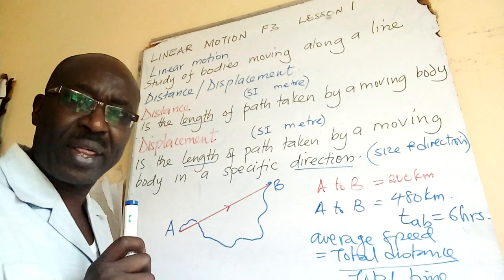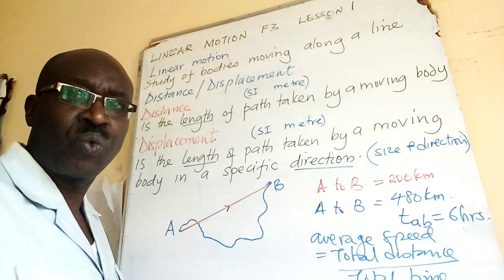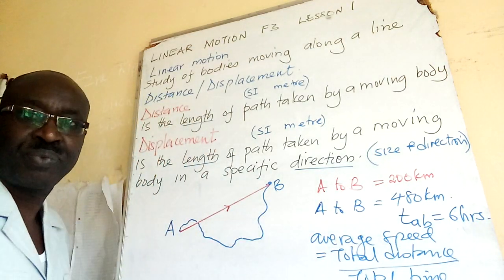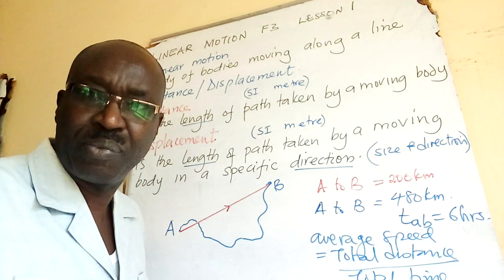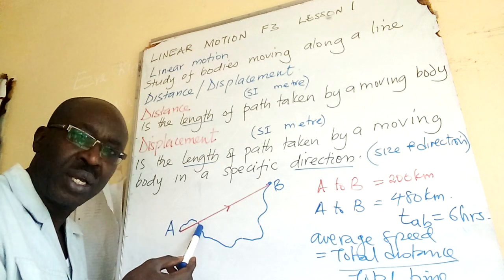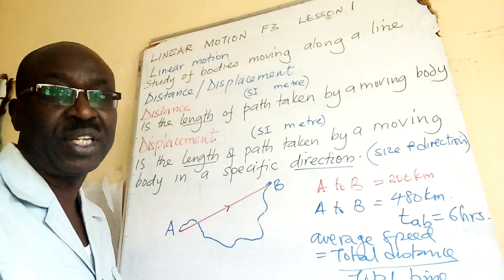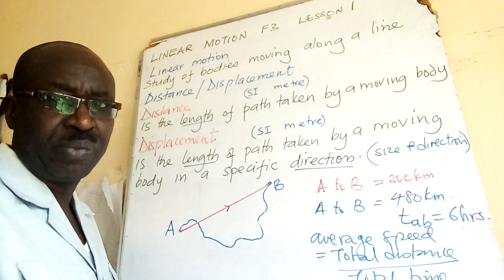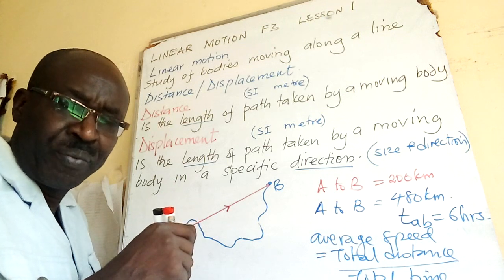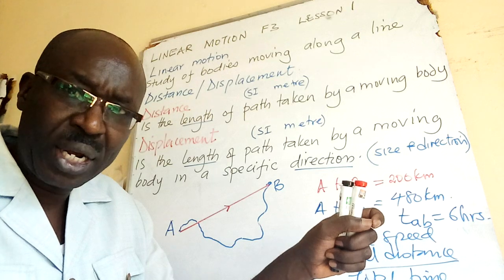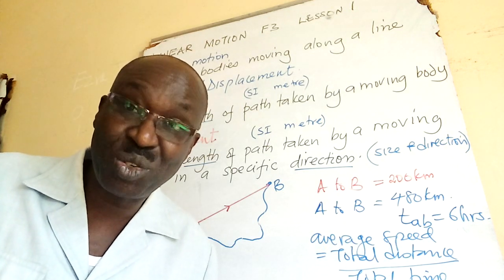In linear motion, whether on a straight path or on a meandering path, we can measure what we call distance. Distance is the length of the path taken by the moving body. If it is map work, you would take a thread and move it the way the blue path moves until you reach point B, then straighten it on a meter ruler — and that length is called distance.